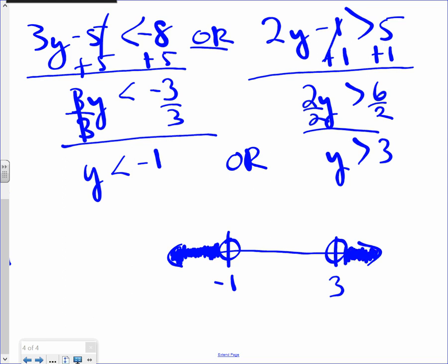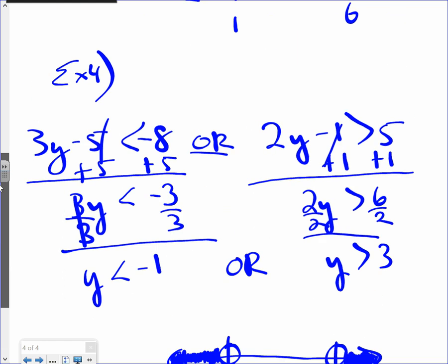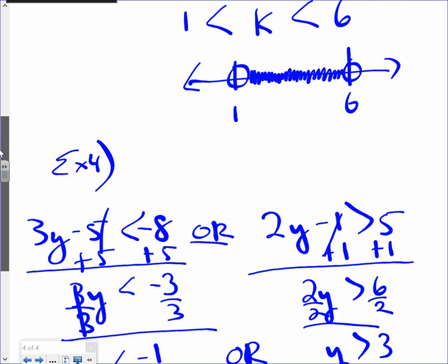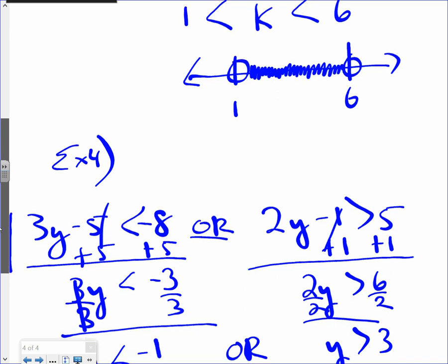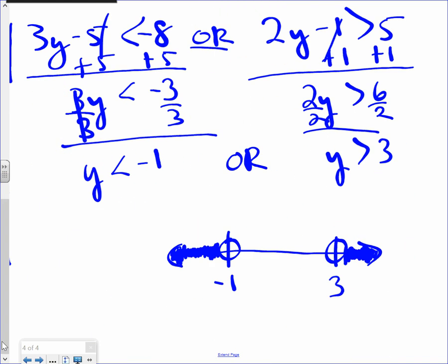So whenever we have an or kind of compound inequality, the shading is done opposite directions. As opposed to in between two numbers. Notice that. Or is opposite and is in between. The word and.